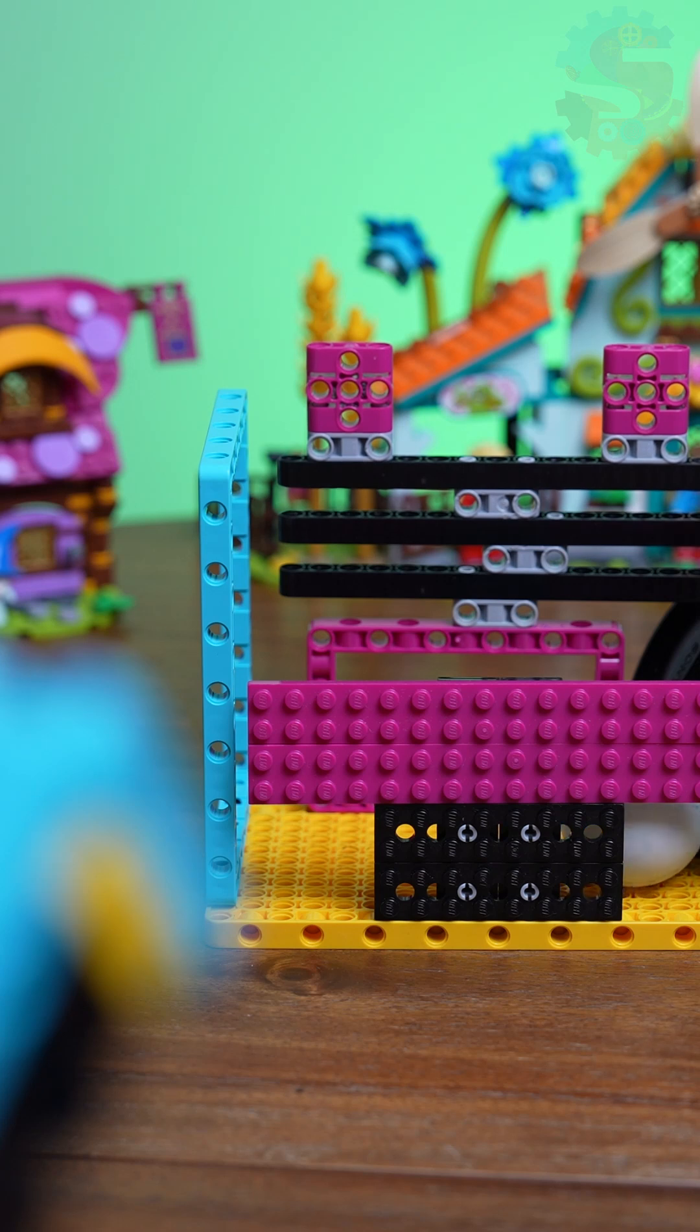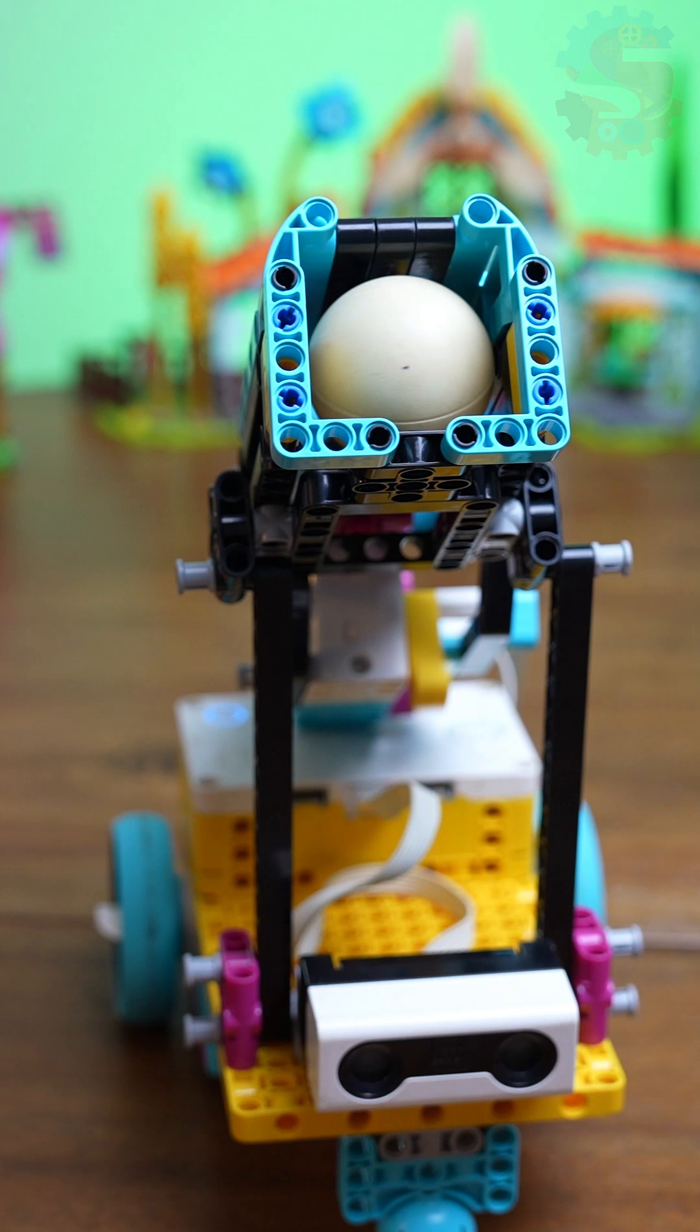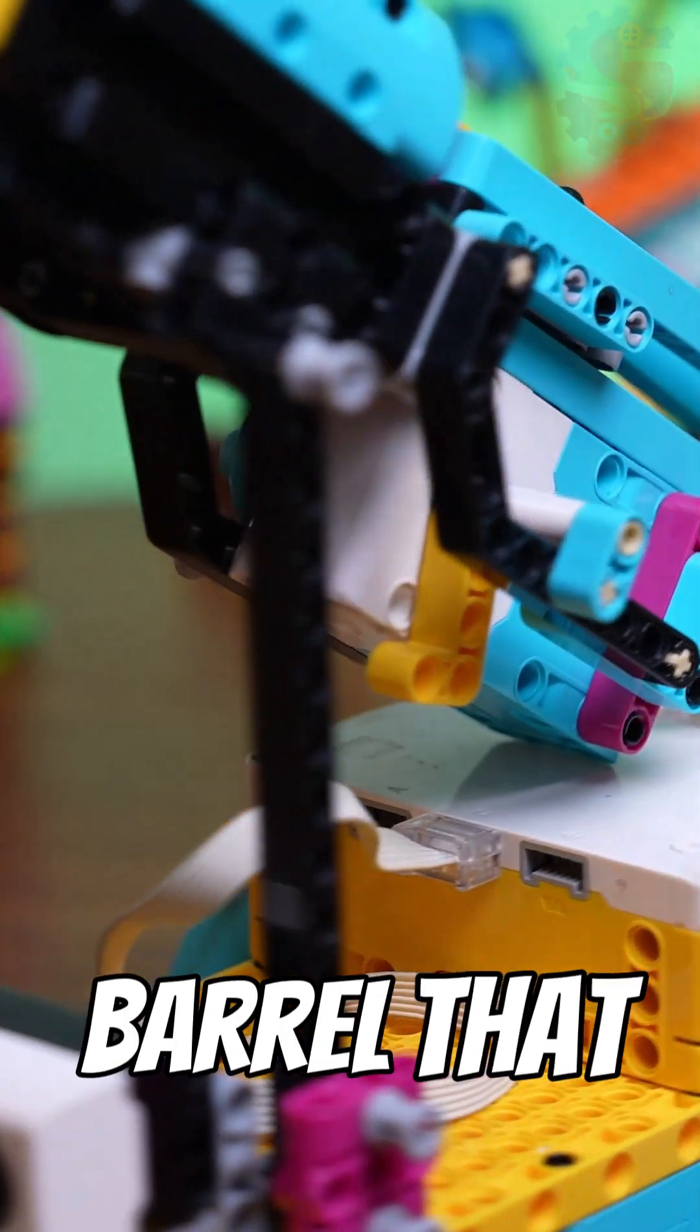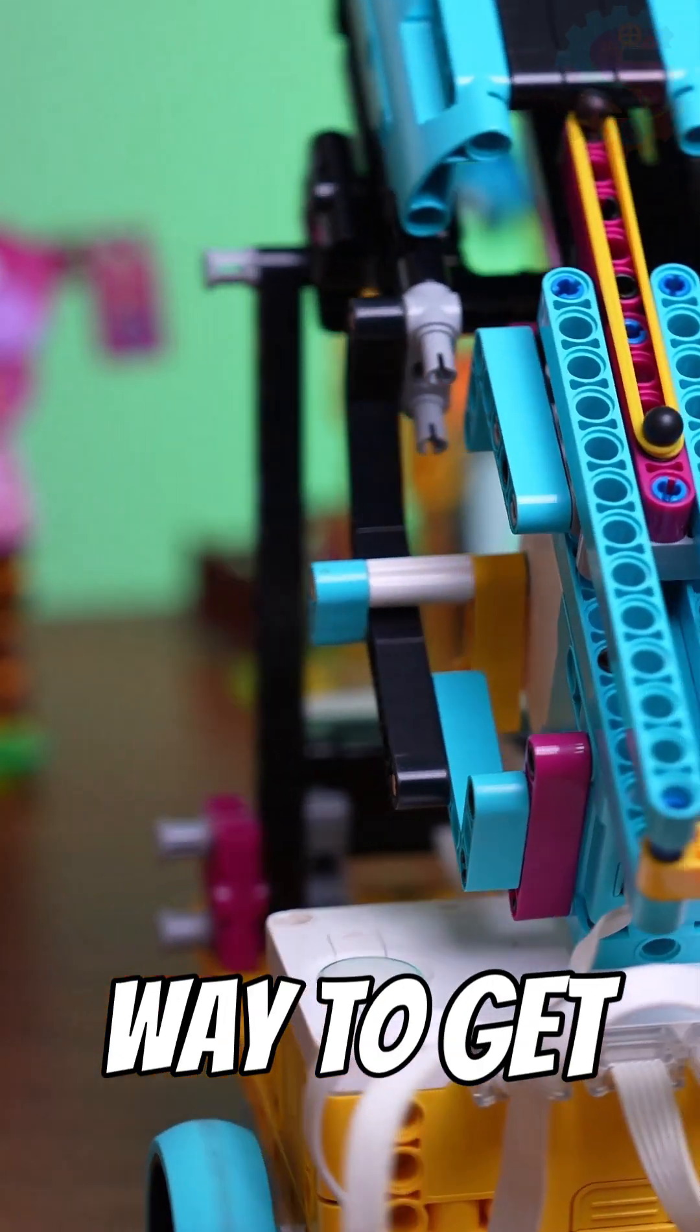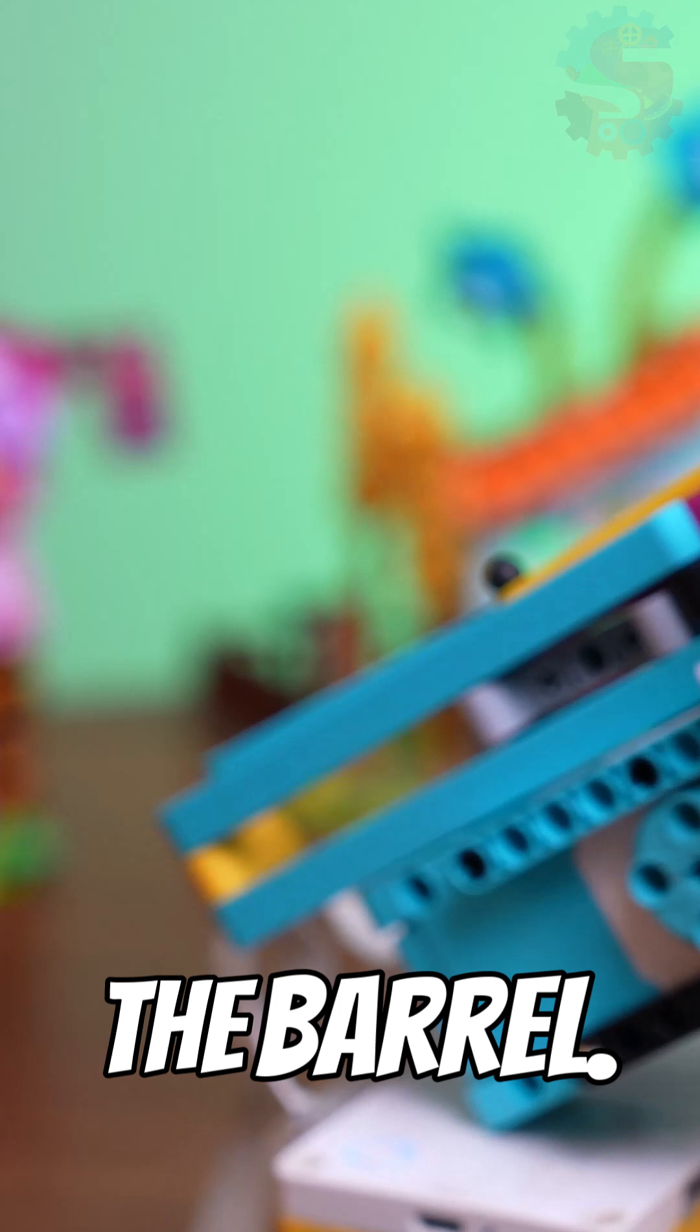It turns out launching a ping-pong ball isn't as easy as it sounds using a spike prime kit. We needed a powerful base that could move around and also be sturdy. We needed precision aim, so a barrel that could hold our ping-pong ball. And we also needed a way to get some energy, a force to push the ball out of the barrel.